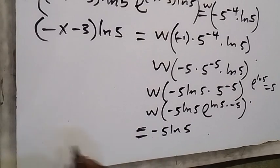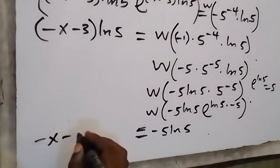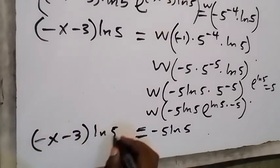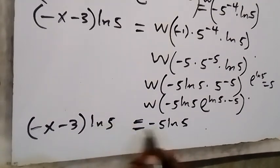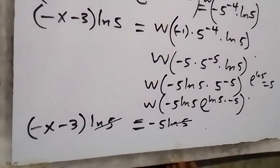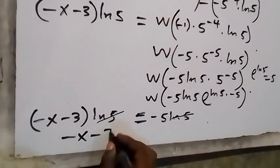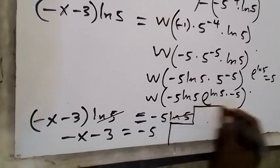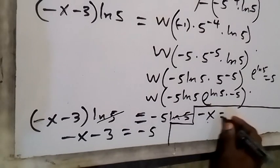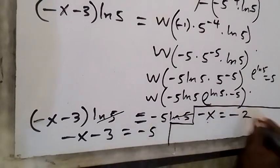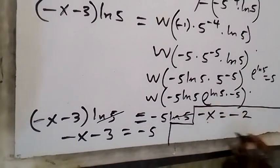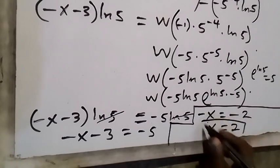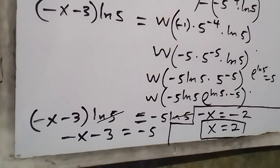When we equate this to the left hand side, which is minus x minus 3 times ln 5, we get minus x minus 3 ln 5 equals minus 5 ln 5. Dividing through by ln 5, it cancels out, and we equate the coefficients: minus x minus 3 equals minus 5. Solving for x: take minus 3 to the other side as plus 3, so minus x equals minus 5 plus 3, which is minus 2. Multiplying through by minus, x equals 2. So x equals 2 is the solution to this problem. We can substitute this back into the equation to confirm whether the solution satisfies the equation. Thank you for watching!